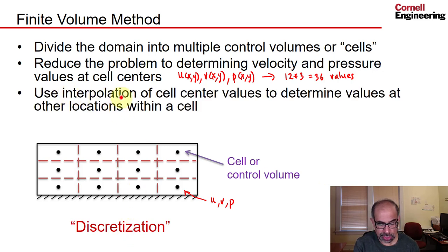And then you use interpolation of the cell center values to determine values at other locations within a cell. For instance, if I wanted to determine the u value over here, I would use an interpolation of these four values. So that's another big idea, interpolation.